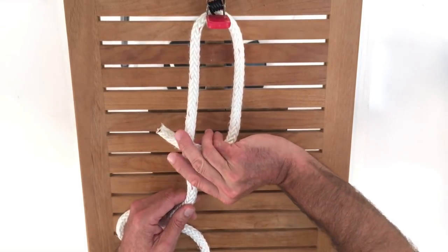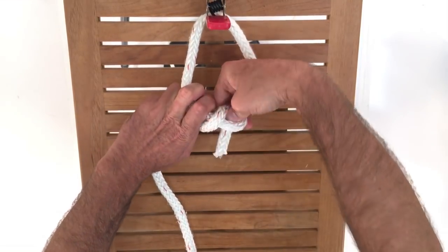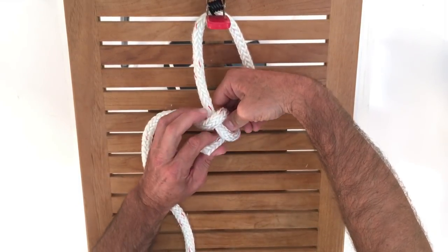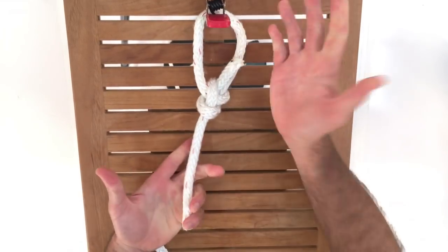So step two is to draw it down and make sure in the dark that that line comes on the right side. Once that's done, I can grab it and pull it through.